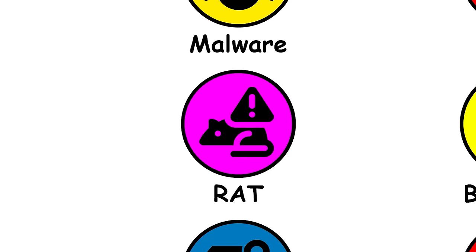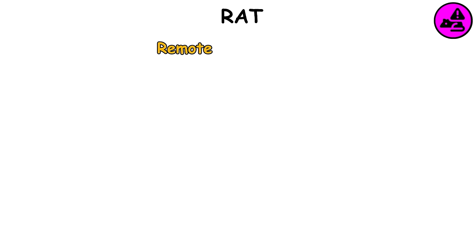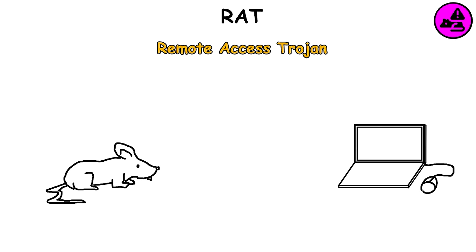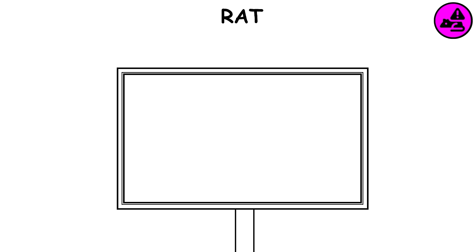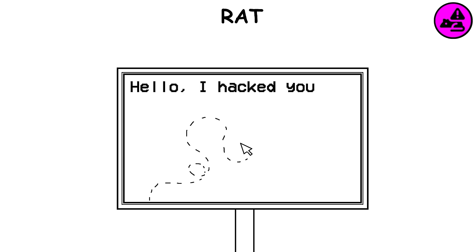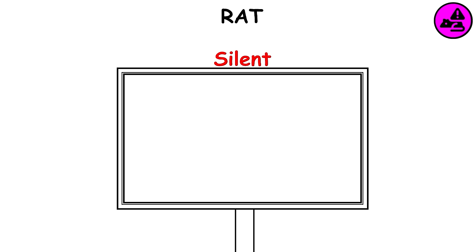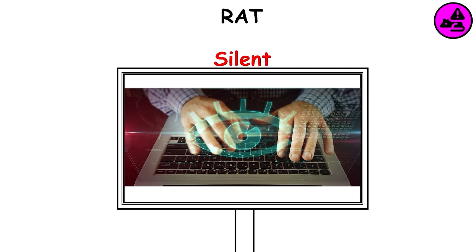RAT. It stands for Remote Access Trojan and it's a type of malware that remotely controls a computer through the internet. When your computer is ratted, the hacker can actually move your mouse, type, look at your webcam and record it, etc. Most of the time, however, it stays silent and acts as a keylogger to gain your personal information.